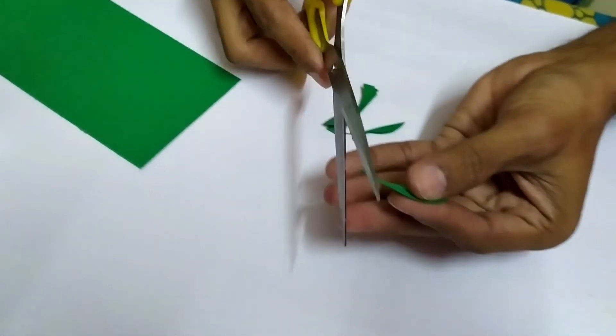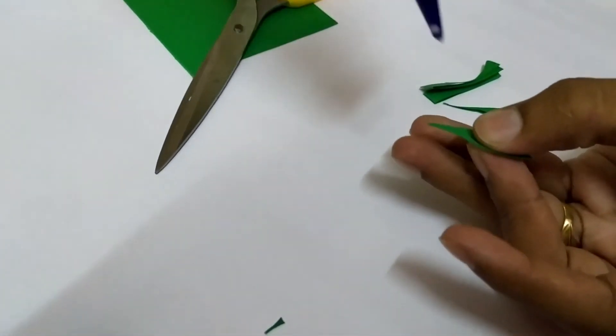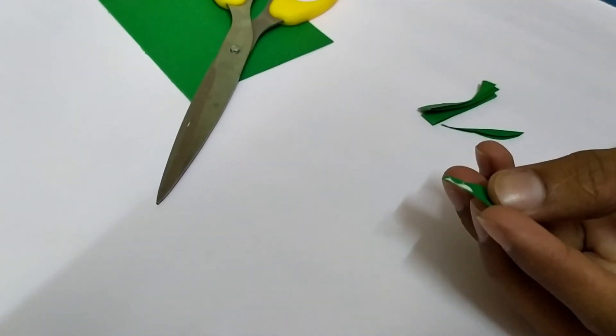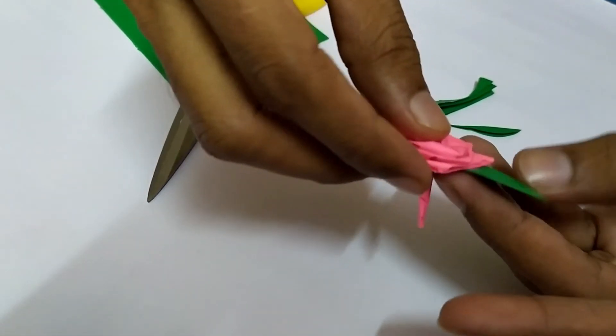Now cut the edge and then apply glue here. Fill it, and then take the rose and stick it back.